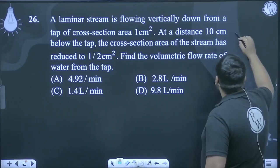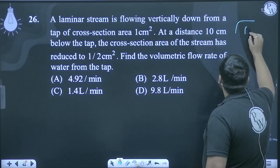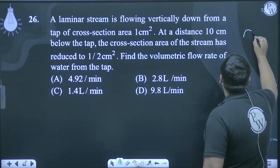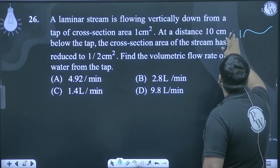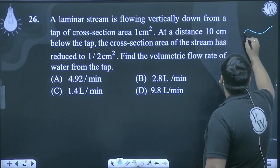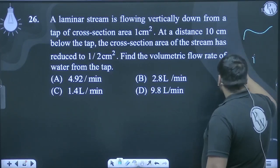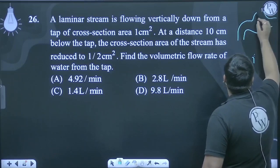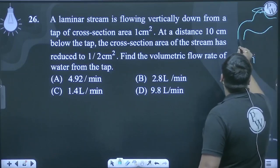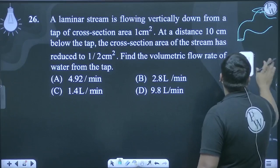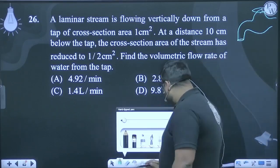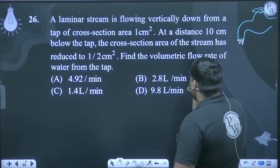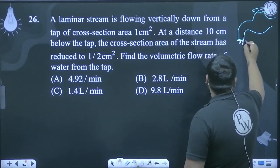So basically what it's saying is there's a tap. From this tap, liquid is flowing out. The tap's cross-section area A is given as 1 cm².